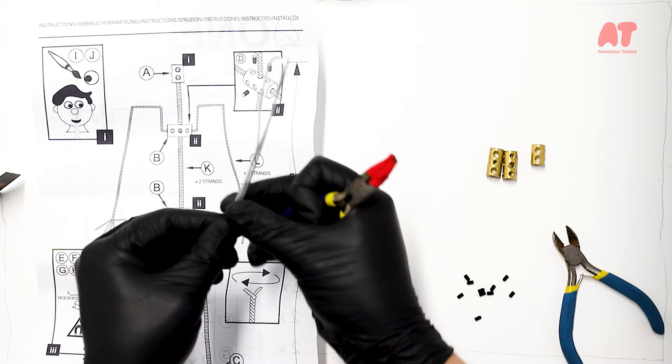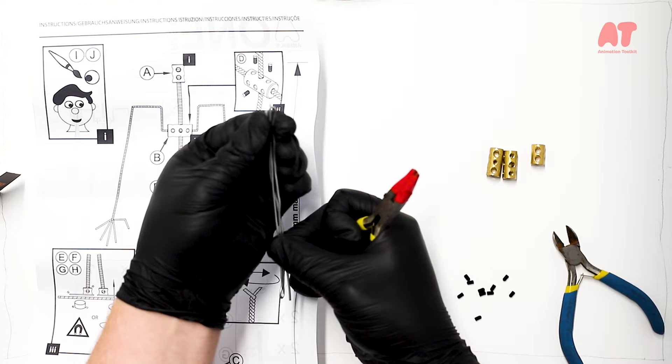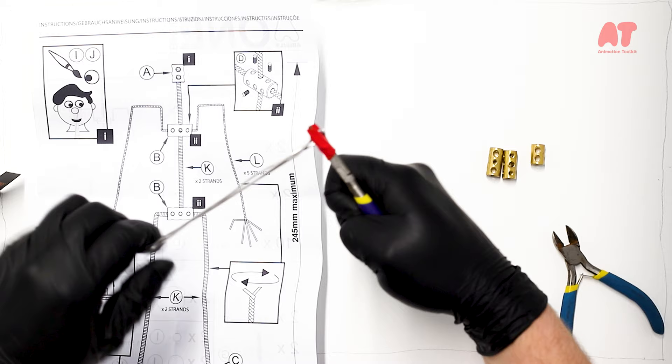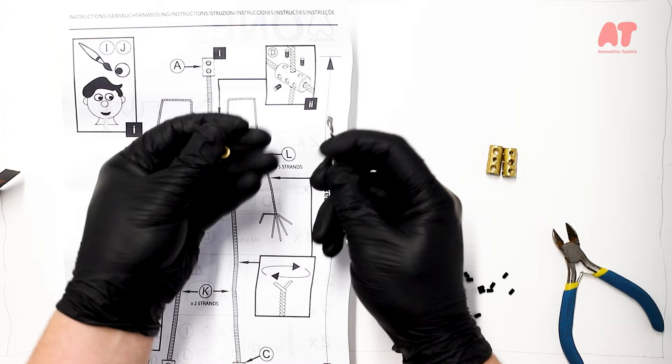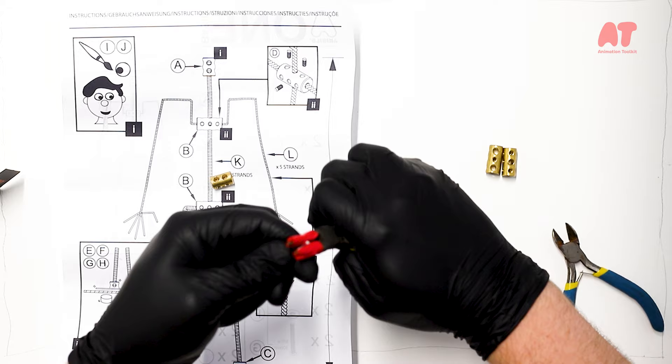I've taken three strands off the 1.5 millimeter spool and clipped it off. I'm just going to push them together with my fingers and start the twist. I'm going to get this twist pretty tight so it will slip into the brass bosses of the head, shoulders, and hips. Three strands twisted is quite strong for a backbone.